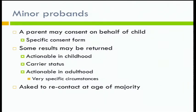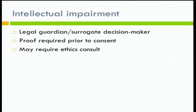In general, we talk to parents about how we'd like their children to re-contact us at the age of majority — when they turn 18 — to discuss the fact that their parents enrolled them in the sequencing study and that we can find genetic information about them and would they like to learn it. That is the ideal circumstance. For people with intellectual impairment, we require a legal guardian or surrogate decision maker and require proof of that prior to consenting participants. We've drawn on the services of our ethics colleagues to help sort through these situations when appropriate.